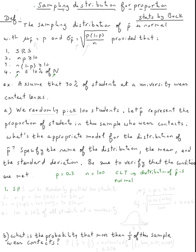For condition one, SRS which is simple random sample, of course the hundred students were picked randomly. So this is checked because we randomly picked one hundred students.